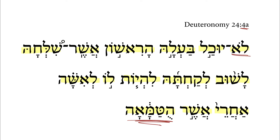We've got the negation here — he is not able. Here is the qal imperfect third masculine singular of the verbal root yachal. Now, normally this shurik does not drop in there, but it does with yachal. That's pretty normal, so yuchal — he is not able.